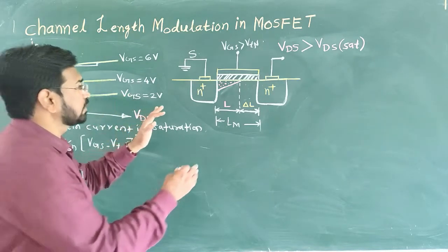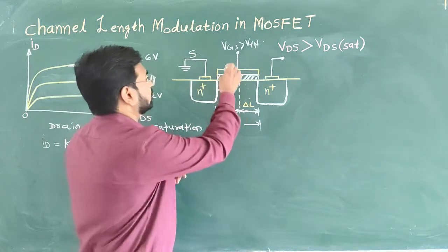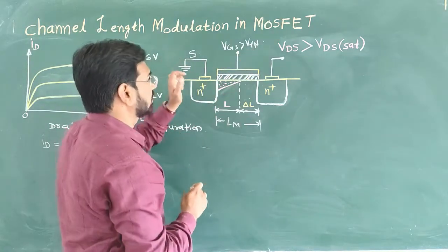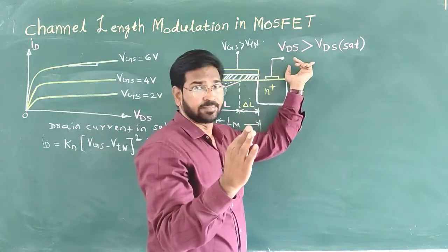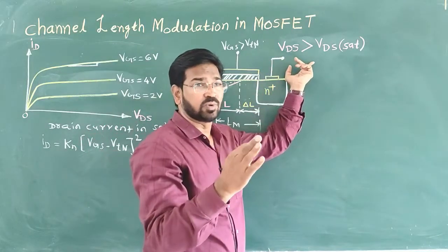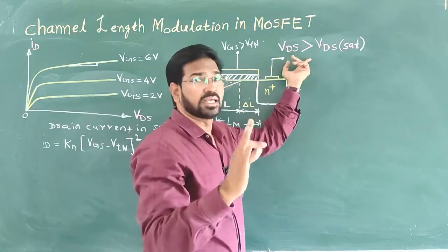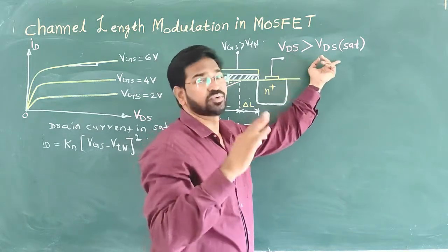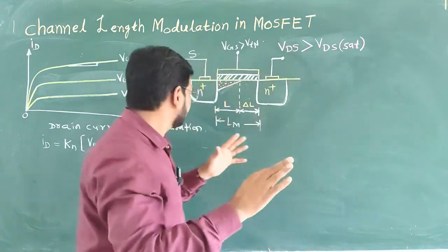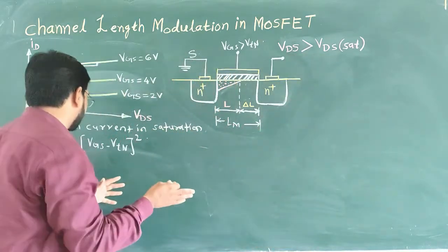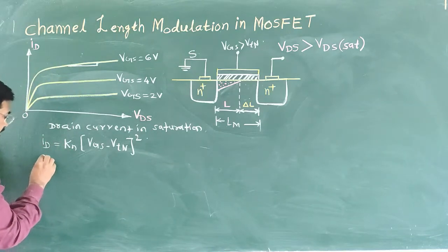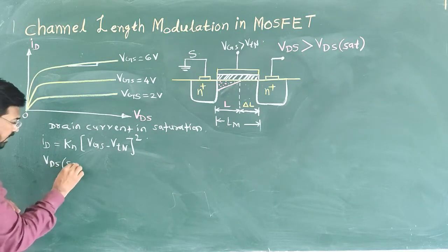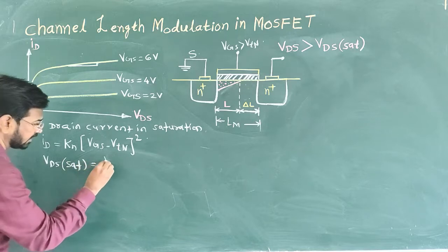Now see what happens here. VGS is greater than VTN, the source is grounded. VDS is not equal to zero — it is greater than the VDS saturation voltage. What is the VDS saturation voltage? We have VDS saturation voltage defined as follows.